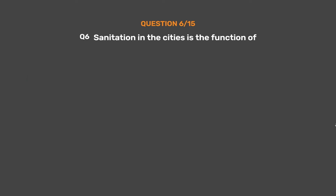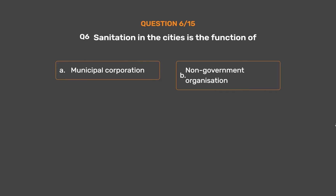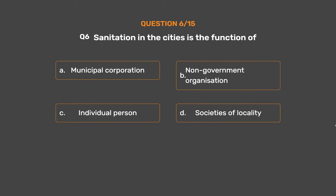Question Number 6. Sanitation in the cities is the function of. Option A: Municipal Corporation. Option B: Non-government organization. Option C: Individual person. Option D: Societies of locality.